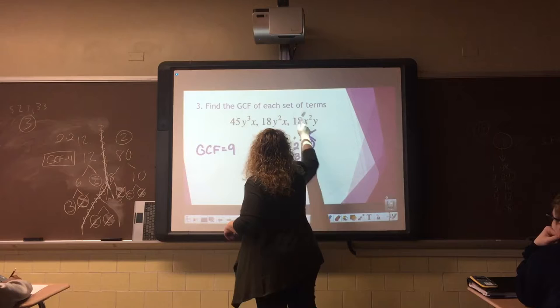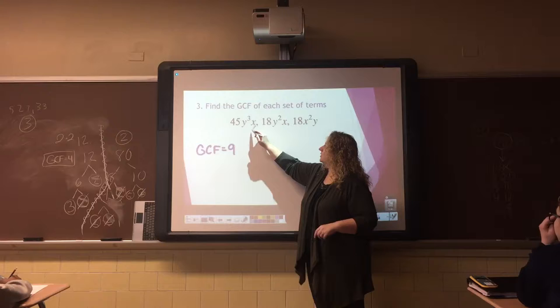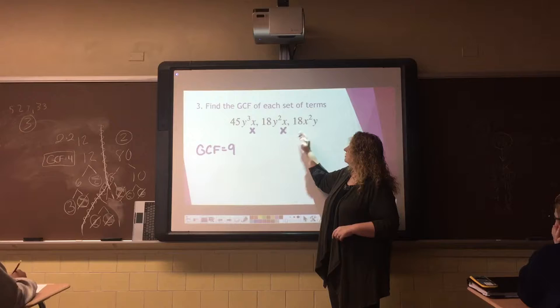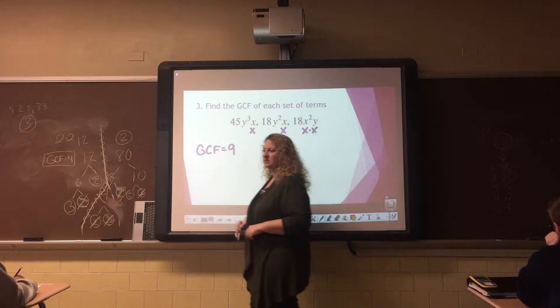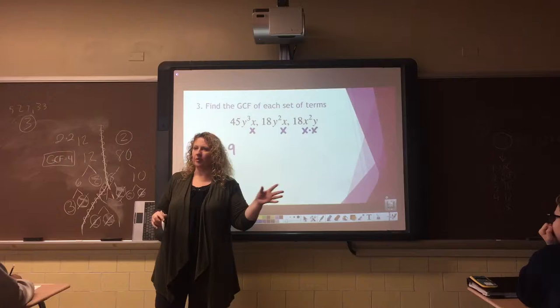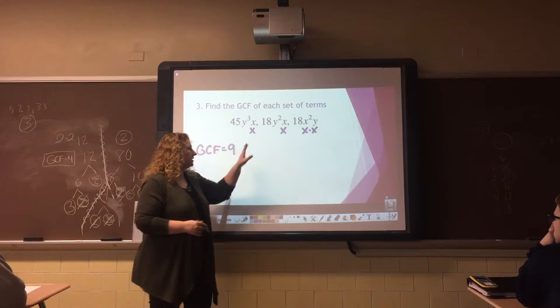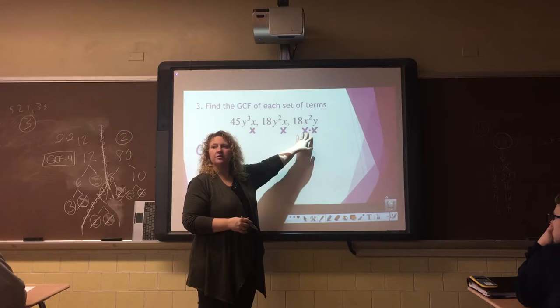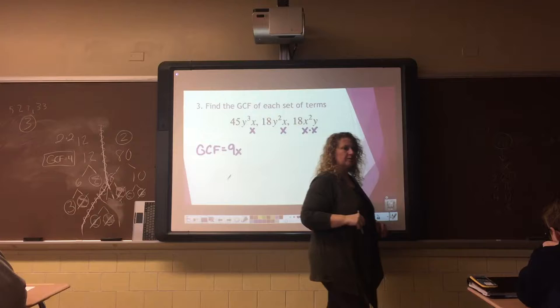Now we're going to deal with our letters, and we're always going to go in alphabetical order, so I'm going to start with my x's first. For this one, I have just an x. For this one, I just have an x. And for the next term, I have x squared, so it's x times x. What is the greatest number of x's that I can pull out of all three of those terms? Just one. I can take an x from each term and still have leftover pieces. So I'm going to have x to the first power.